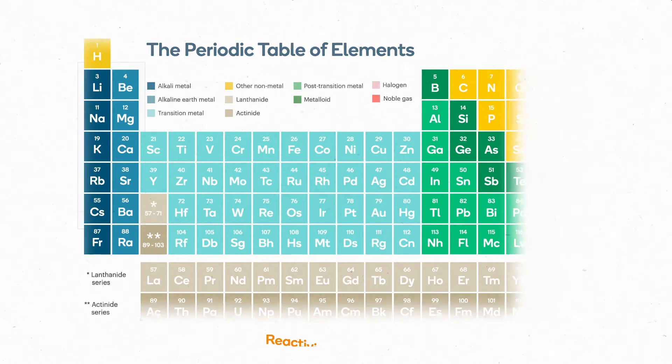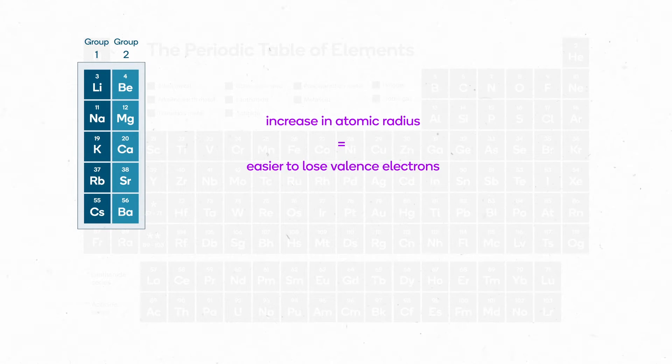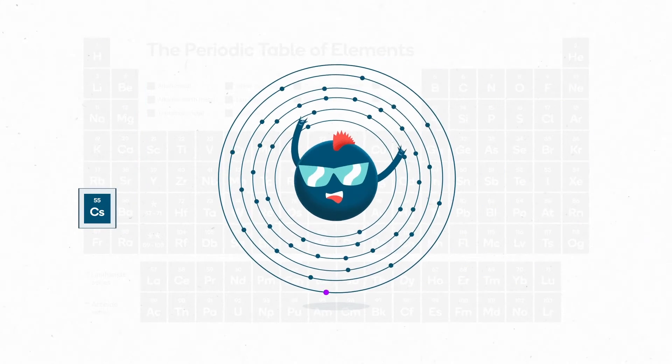In the last video, we saw how reactivity increases down groups 1 and 2 of the periodic table. The increase in atomic radius makes it easier for atoms to lose their valence electrons in a reaction and achieve a full outer shell. So that explains why cesium is extremely reactive.